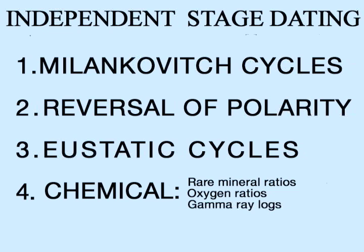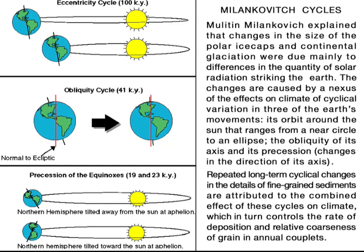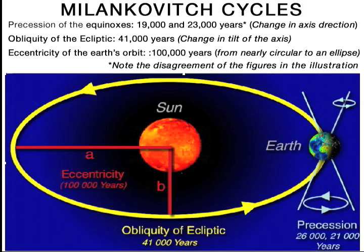Shown graphically on these four slides are the three causes of Milankovitch cycles. These are the effects on sedimentary successions and on glaciation of periodic cyclical changes in the tilt and direction of the Earth's poles, along with changes in the eccentricity of its elliptical orbit around the Sun.